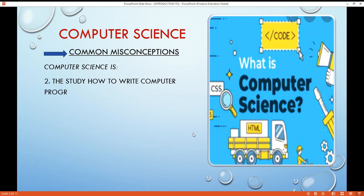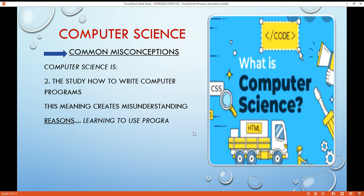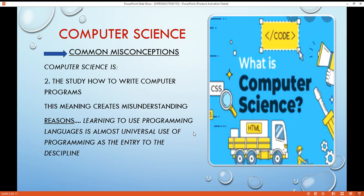The second misconception is computer science is the study of how to write computer programs. Many people are introduced to computer science when learning to write programs in a language such as C++, Python, or Java. This almost universal use of programming as the entry to the discipline can create the misunderstanding that computer science is equivalent to computer programming. Programming is extremely important to the discipline. Researchers use it to study new ideas and build and test new solutions, but like the computer itself, it is a tool. When computer scientists design and analyze a new approach to solving a problem or create new ways to represent information, they often implement their ideas as programs to test them on an actual computer system. That's why learning to use programming languages is almost universal use of programming as the entry to the discipline.